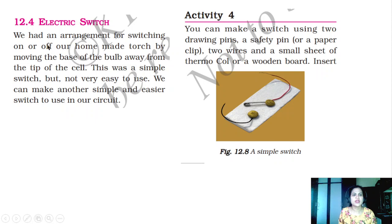We had an arrangement for switching on and off our homemade torch by removing the base of the bulb away from the tip of the cell. This was a simple switch but not very easy to use. We can make another simple and easier switch to use in our circuit.